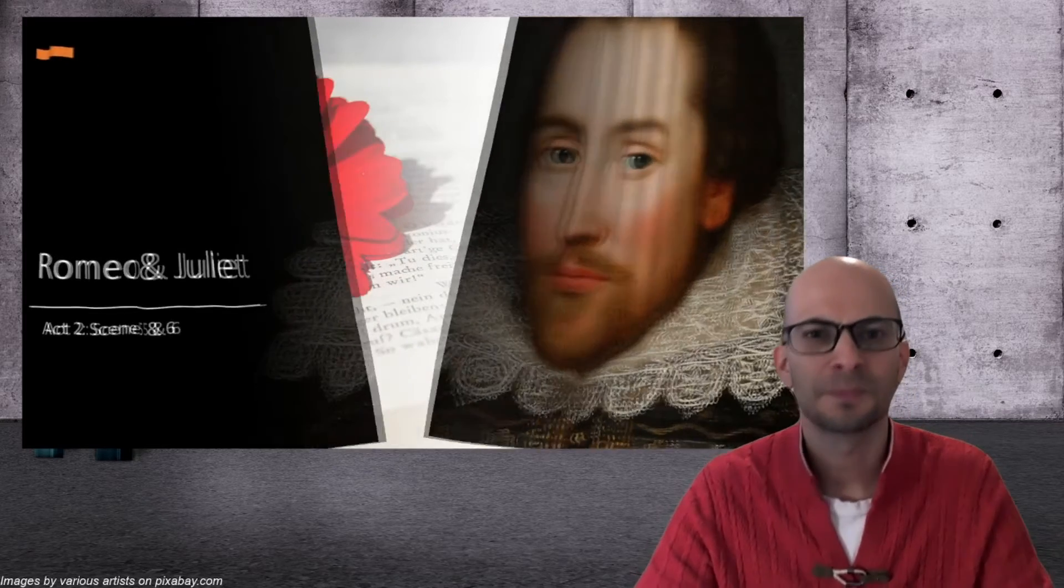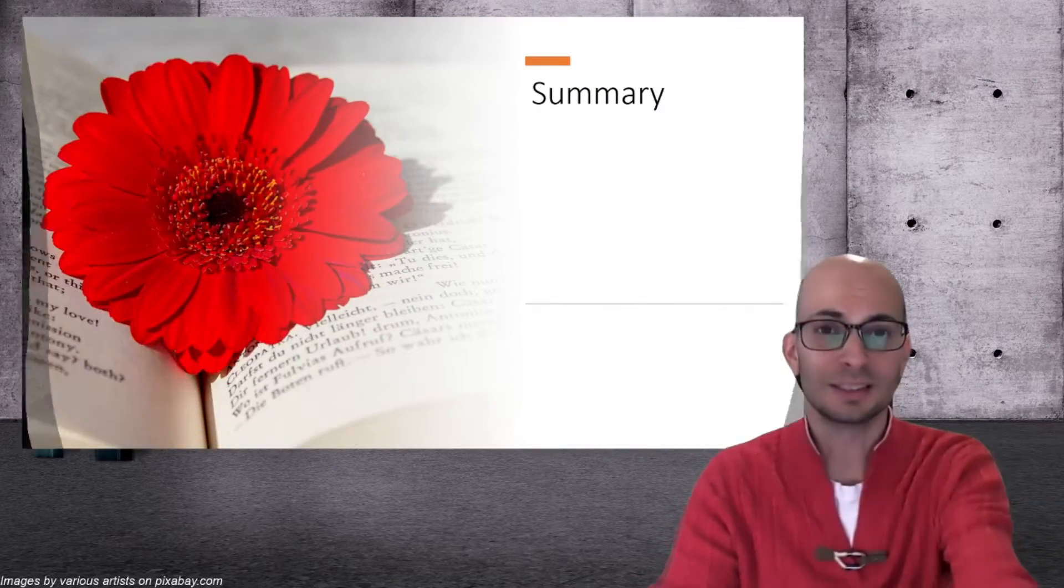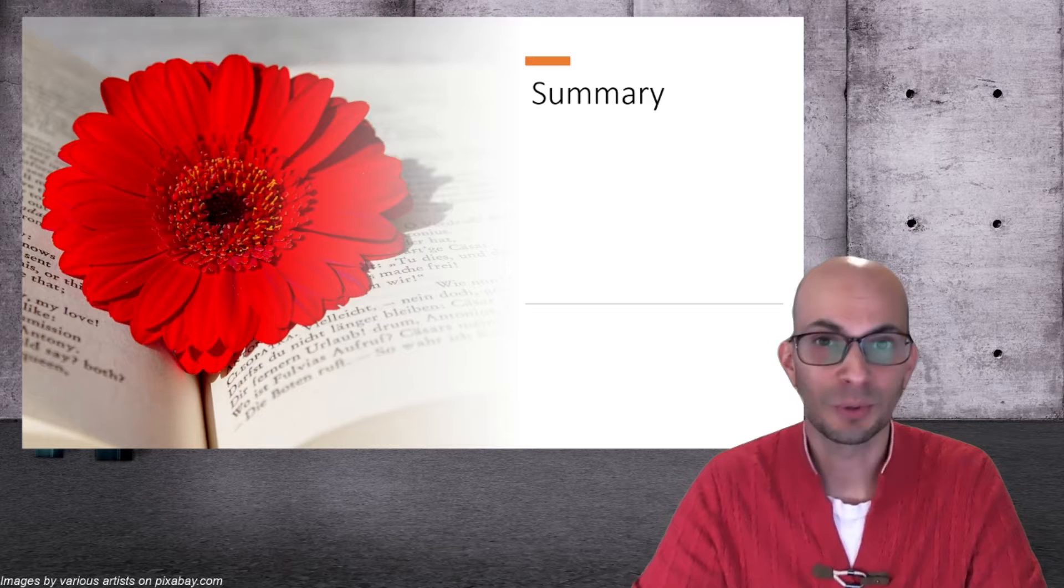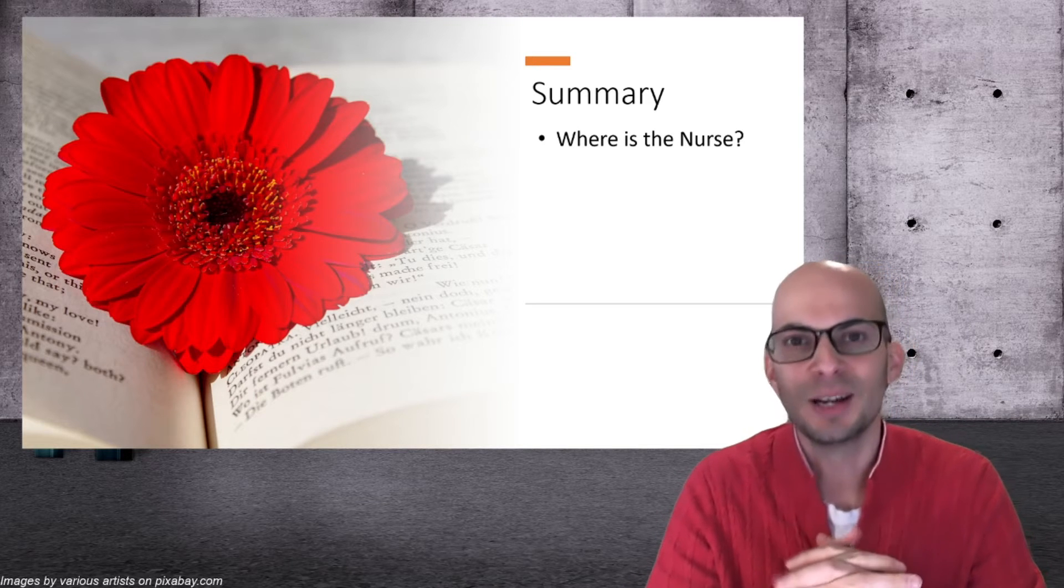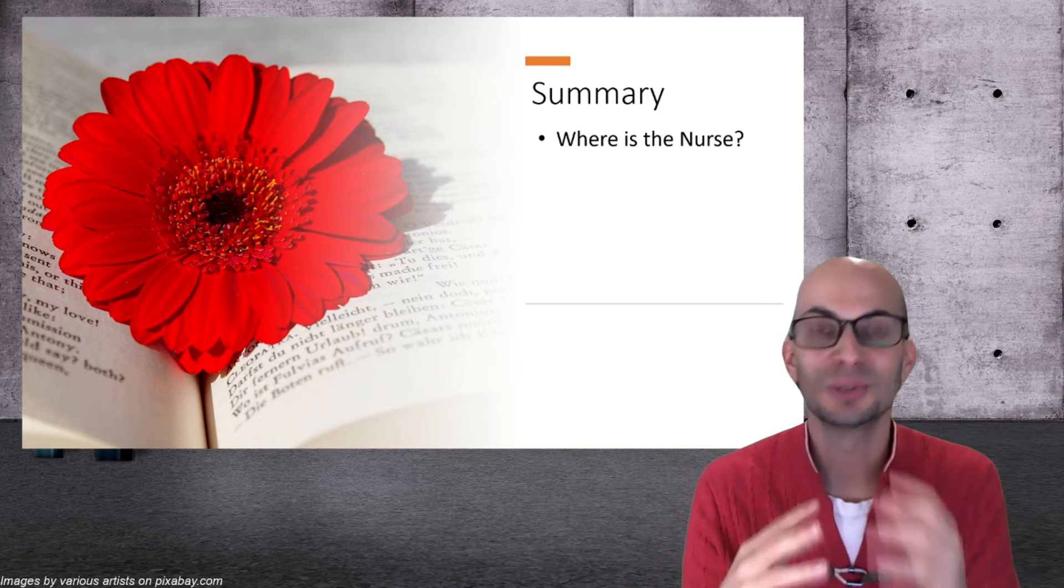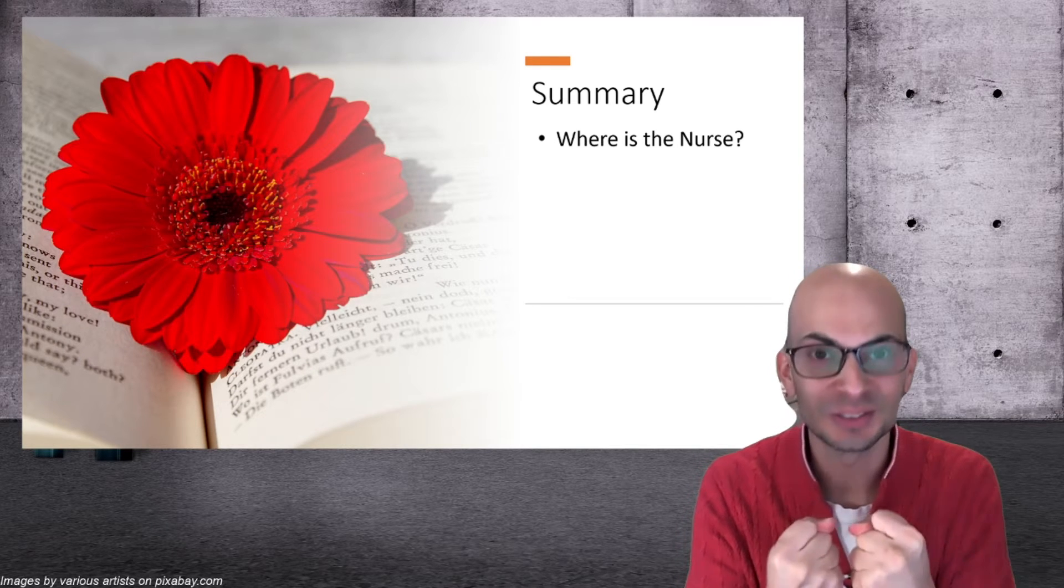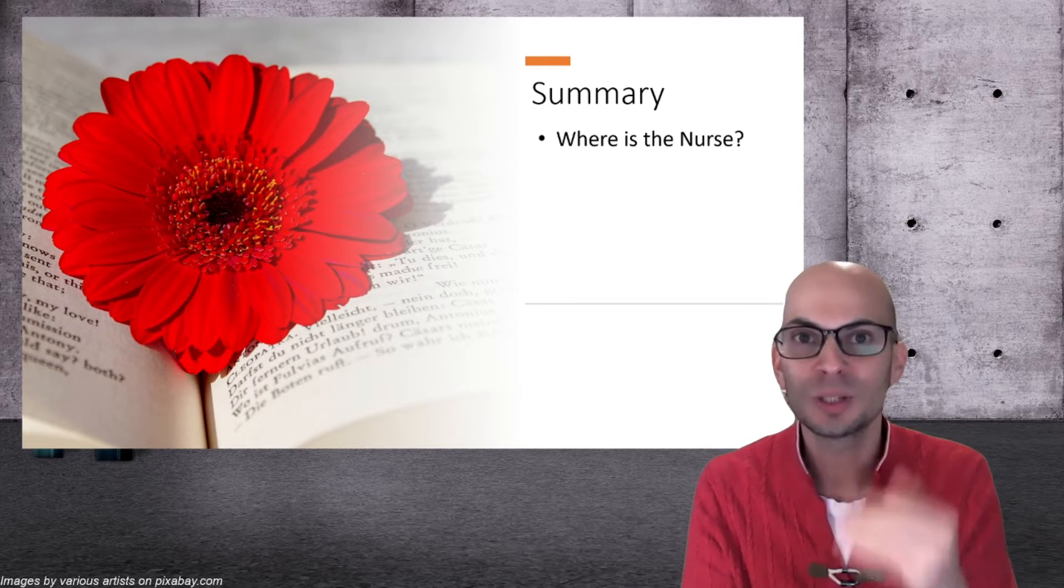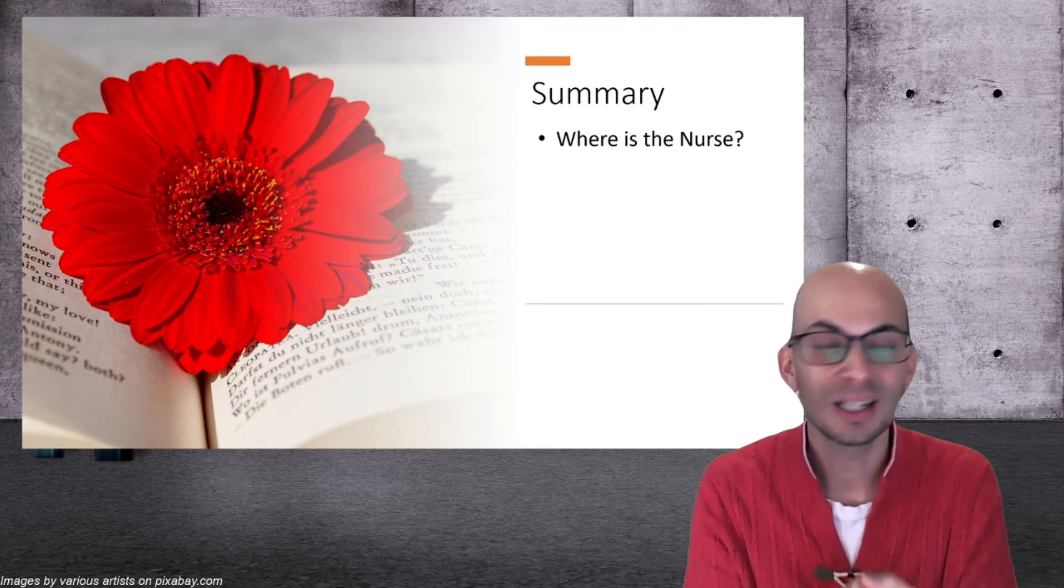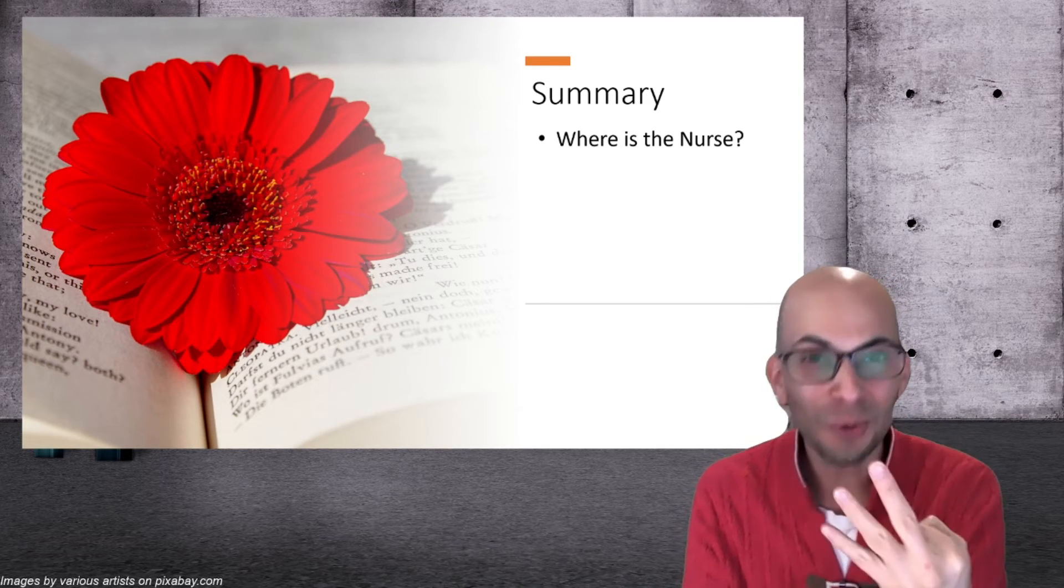They're both very short, but the first scene, Scene 5, is a little bit more confusing. So it starts off with Juliet just wondering, where in the world is this nurse? She said she'd only be like 30 minutes or an hour, and it's already been three hours. Where is she?